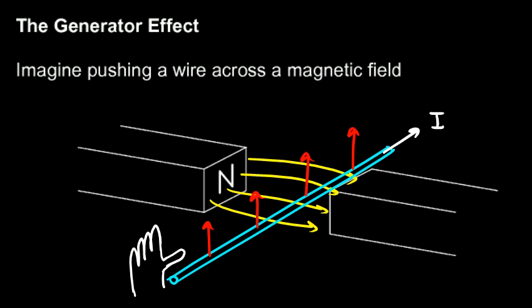And that is the generator effect. You move the wire across the field and current is produced in the wire. So from a physical motion you get an electric current, and you can see that that's the opposite of a motor.